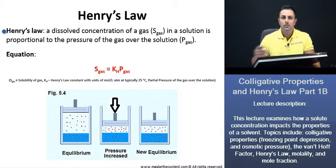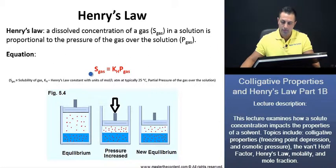If we want to find the solubility of the gas, we can do so through the following equation, where we have the solubility of the gas. Here we have Henry's Law constant, as we see, and the partial pressure of the gas over the solution.